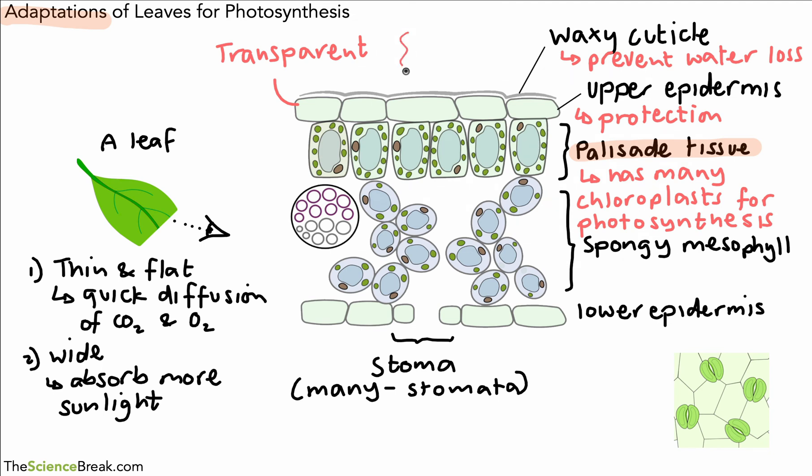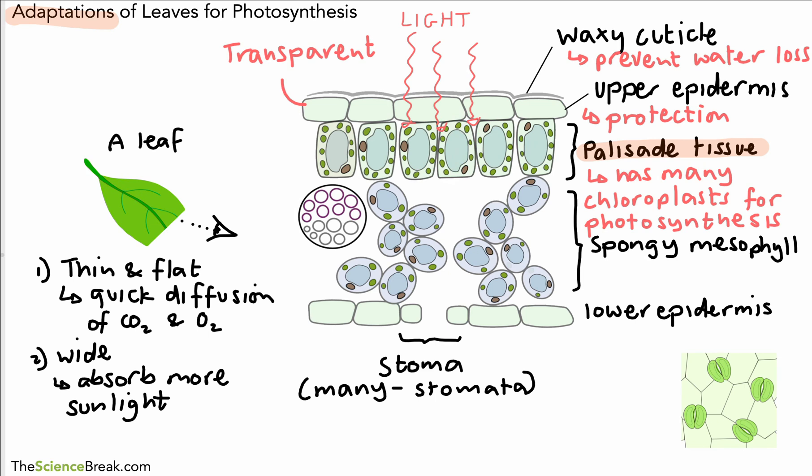So the light comes in from above, passes through the upper epidermis which is transparent, and hits that palisade tissue. So there's our light, hits that palisade tissue with all its chloroplasts, and because there's lots and lots of chloroplasts there as you can see, each one with their chlorophyll, it's going to absorb a lot of the sunlight. So the palisade tissue has not only lots of chloroplasts, but it's near the top surface of the leaf to absorb maximum sunlight.